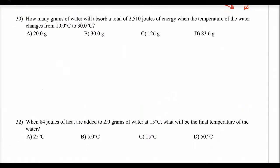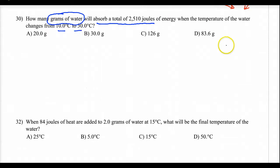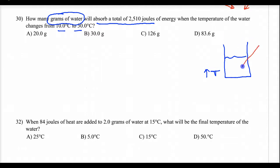Number 30 — a lot of people have asked about this question. It's asking for how many grams of water. How do I know it's the Q formula? The question asks: how many grams of water will absorb a total amount of energy when the temperature changes from 10 to 30 degrees? Draw yourself a diagram — the temperature is going up, so heat is flowing into the system. They're actually telling me how much energy is going in: 2,510 joules.